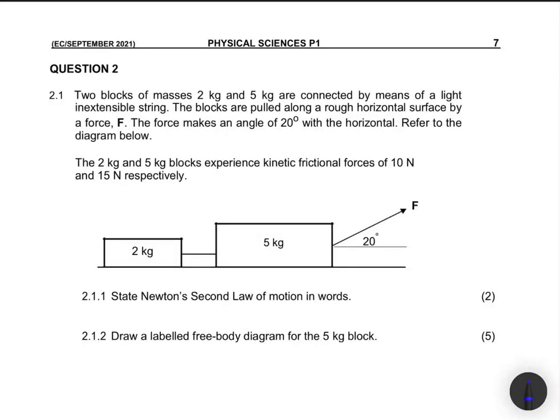We have two blocks here, one of 2 kg and the other one of 5 kg. There's a force applied on the 5 kg block at an angle of 20 degrees. The 2 kg and the 5 kg blocks both experience kinetic frictional forces of 10 newtons and 15 newtons respectively. So the 2 kg block experiences 10 newtons and the 5 kg block experiences 15 newtons of kinetic friction.